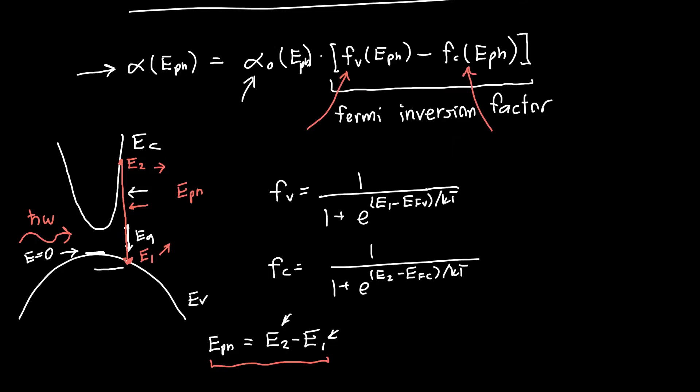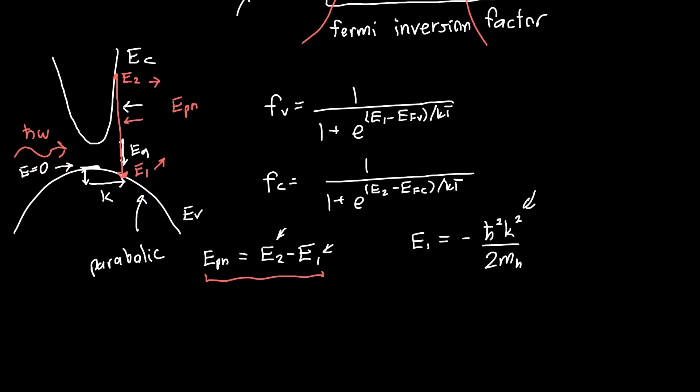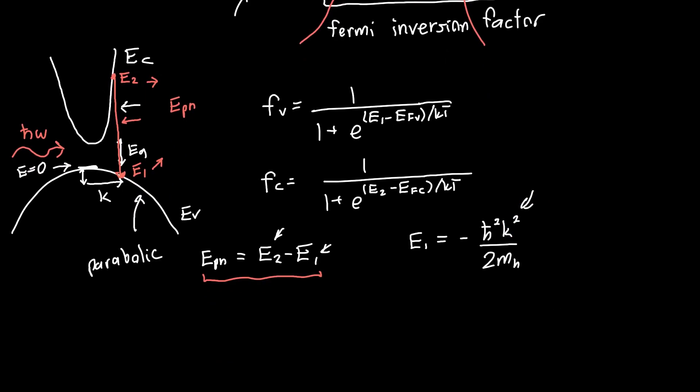Since energies are fundamentally relative, I'm going to choose the valence band edge to be E equals 0. This will let us use this as a reference and more easily figure out what's E1 and what's E2. We know that E1 and E2 can both be related to the crystal momentum K at which this interaction happens. So E1 is just negative ℏ²K²/(2mh), the effective mass of the hole. This is the kinetic energy of the particle. This is also assuming that these bands are parabolic.